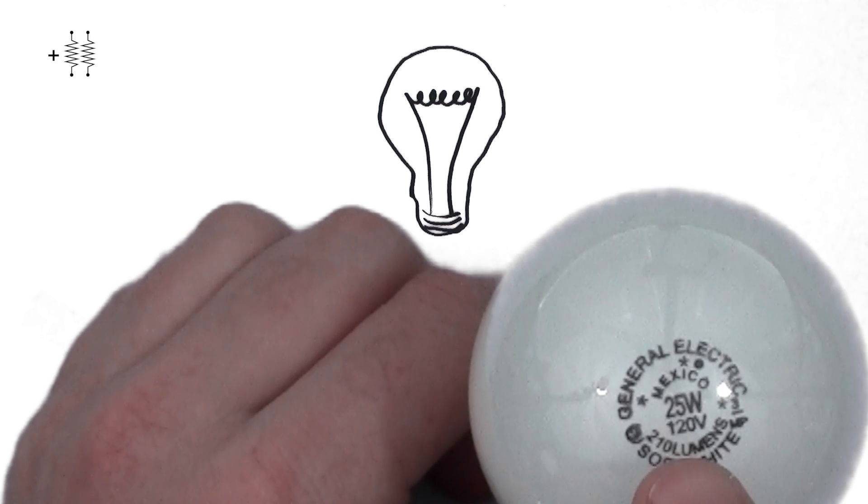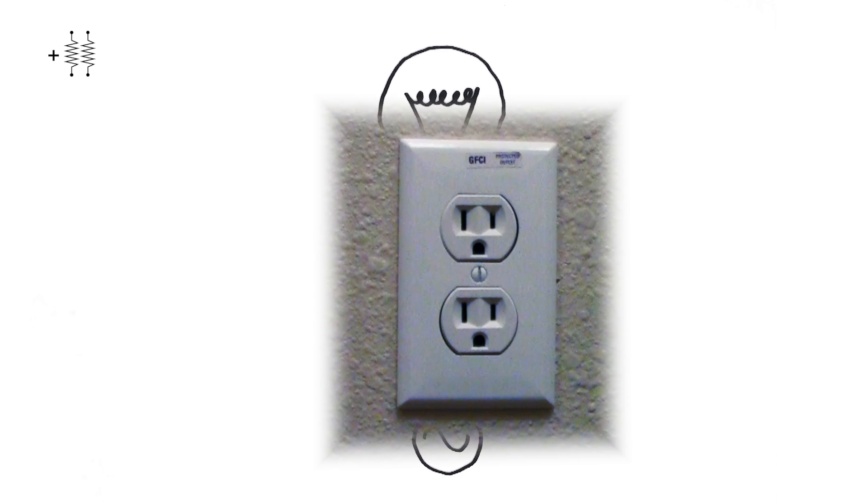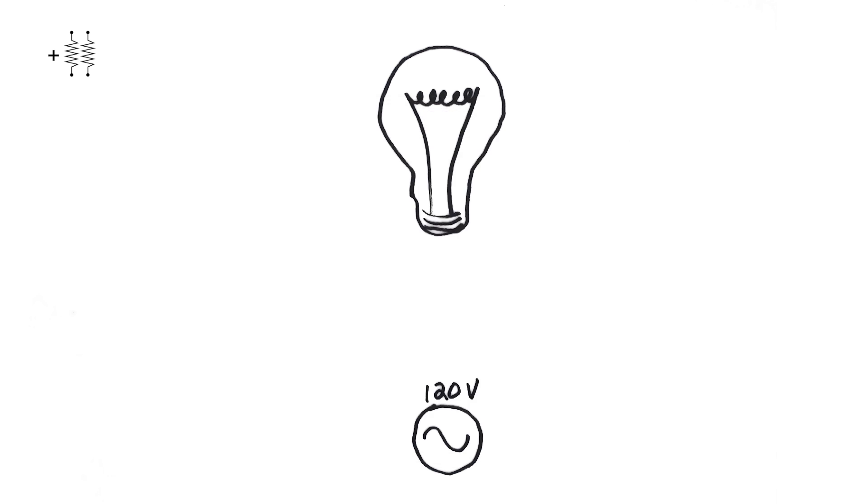As you might remember, the top of our light bulb said it was 120 volts. That means it is rated for electrical systems running 120 volts. When I go to my wall sockets that look like this, guess what comes out of them? 120 volts. Shocking, I know.